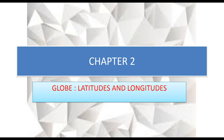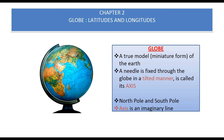Welcome to the class. In the previous chapter we learned that the earth is not exactly spherical — it's slightly flattened at the north and south poles and bulged at the middle. In today's chapter we'll be learning about globe, latitudes, and longitudes. A globe is a true model or miniature form of the earth, used to get a broad-level picture of the world; countries and continents are drawn on it.